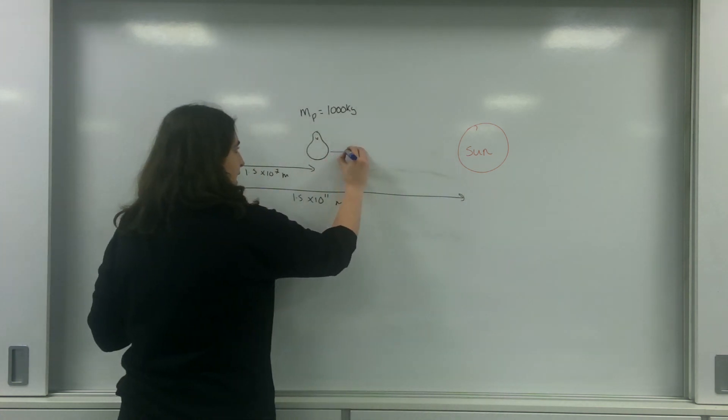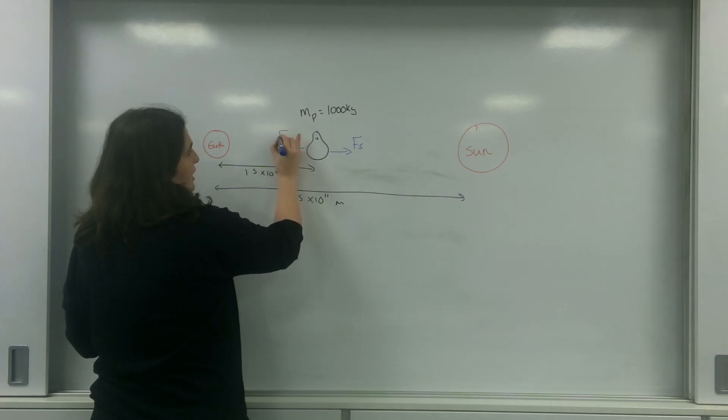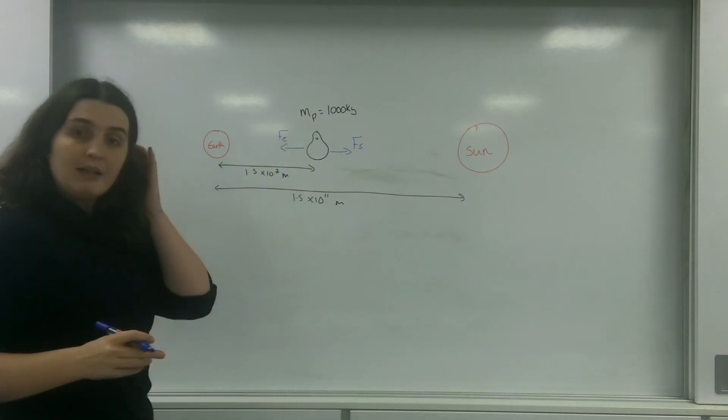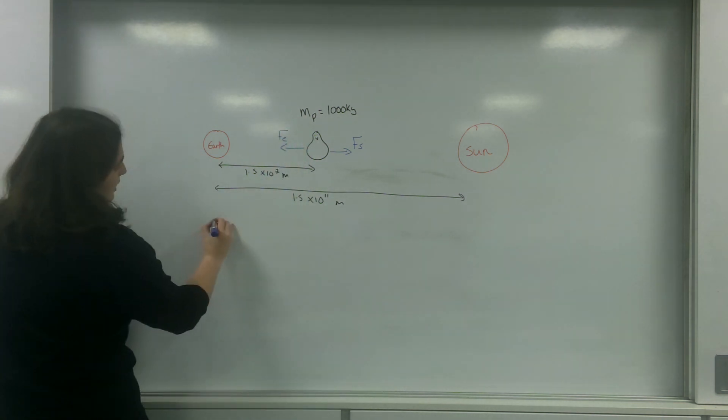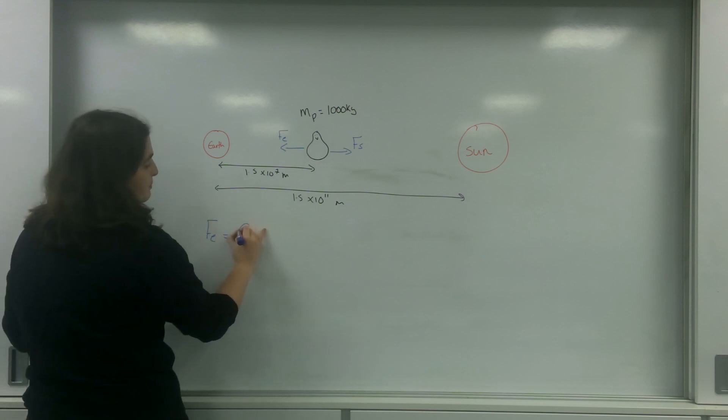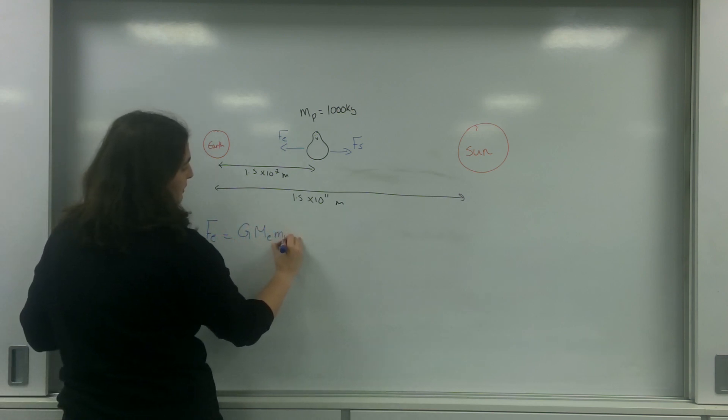So I've got this force here due to the Sun and this force here due to the Earth. I'm going to calculate them now. The force due to the Earth is big G, M of the Earth, mass of the penguin, over R squared.